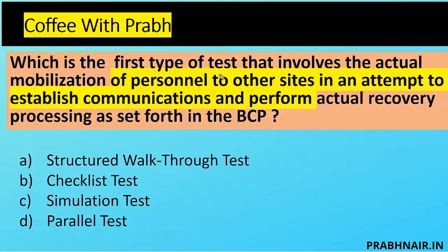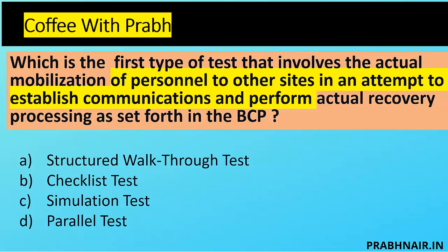Which is the first type of test that involves actual mobilization of personnel to another site in an attempt to establish communication and perform actual recovery processing as set forth in the BCP? We remove checklist, simulation, and structured walkthrough — those happen at the primary site. The answer is D, parallel test. In a parallel test, hot site is the best option because it is identical to the primary site. Cold site is very expensive to test.